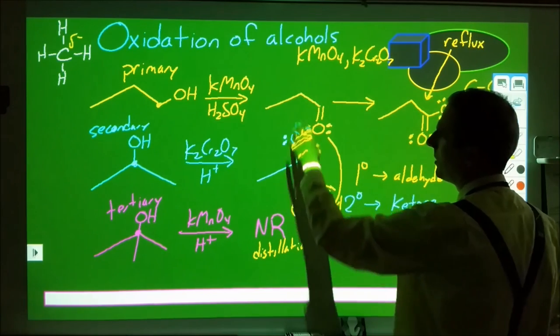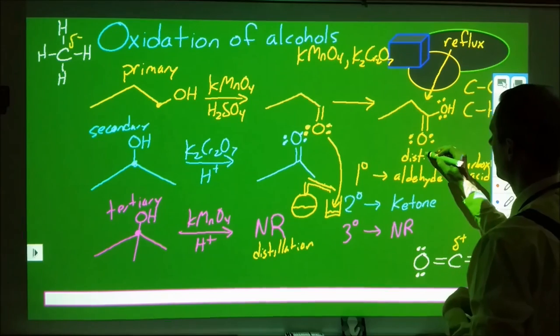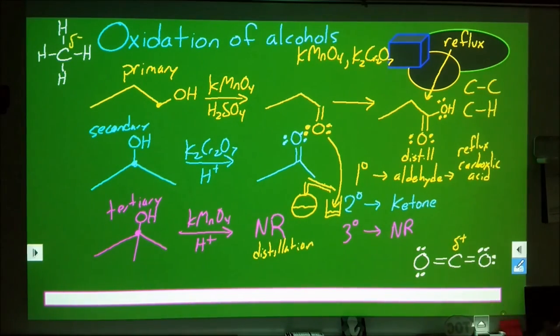So if we heat under distillation conditions, we're going to end up forming the aldehyde, while if we heat under reflux conditions, we're going to continue through and form the carboxylic acid.